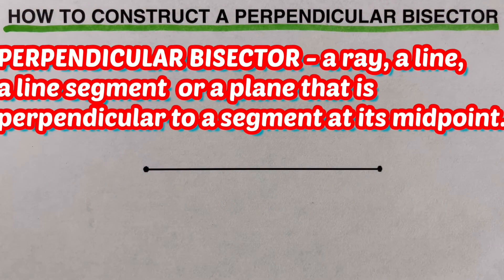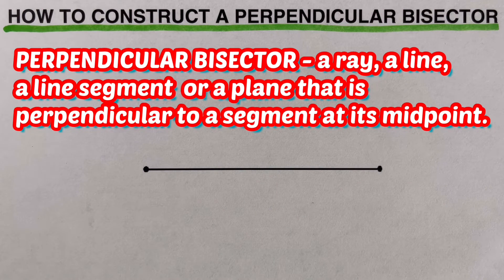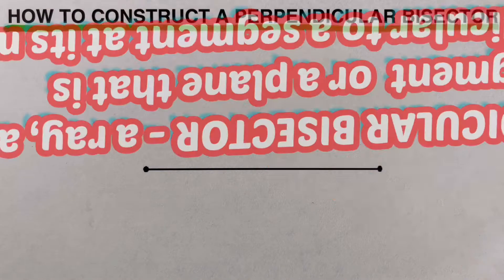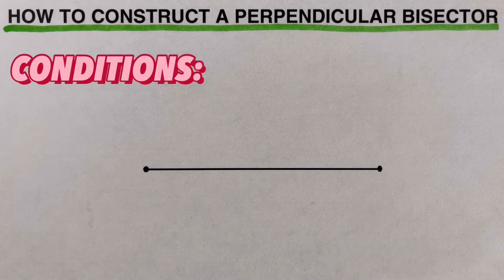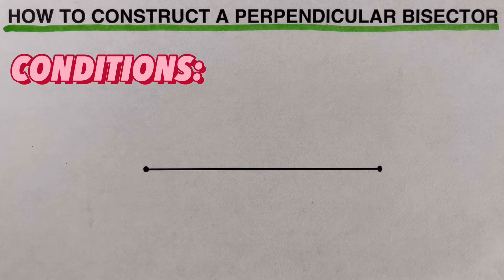A perpendicular bisector is a ray, a line, a line segment, or a plane that is perpendicular to a segment at its midpoint. There are two conditions that must both be met in order to say that a given ray, line, line segment, or plane is a perpendicular bisector.